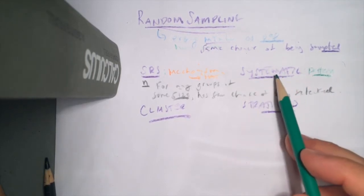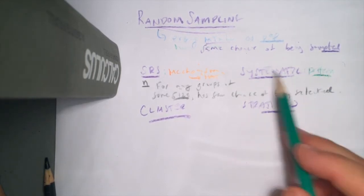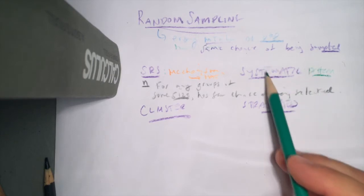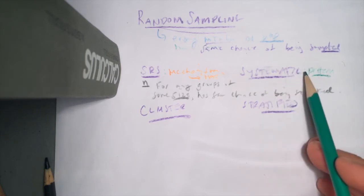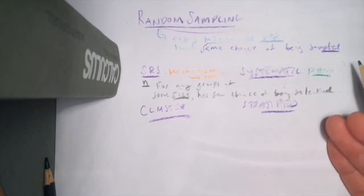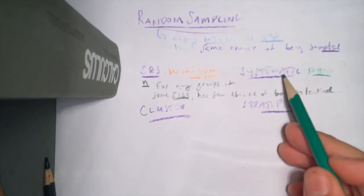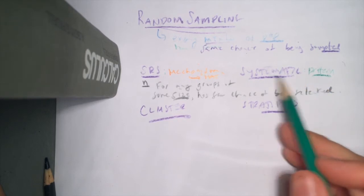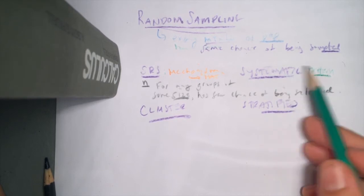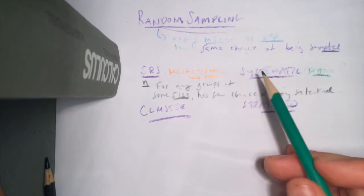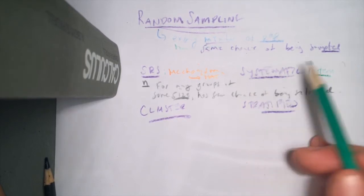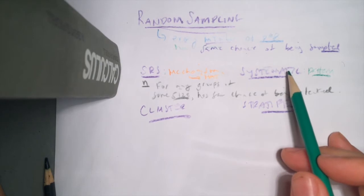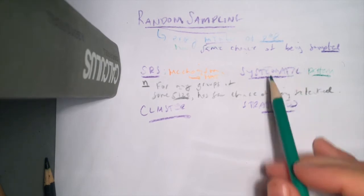The very first individual from which you apply the pattern is randomly selected — frequently using something like a random number table or random number generator, which we'll talk about pretty soon.